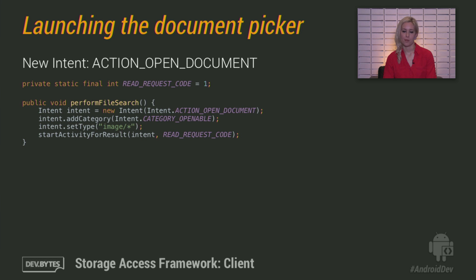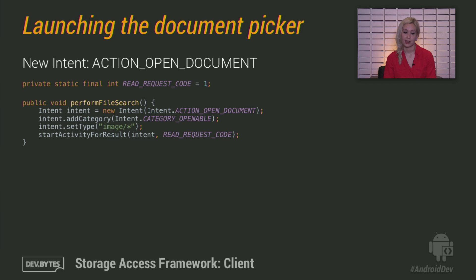Let's talk about ACTION_OPEN_DOCUMENT. This isn't much different than what you may have done before. You're going to create an intent. Category openable means we only want results that can be opened — basically documents, as opposed to a list of contacts or time zones. The type is the document MIME type you want. Here I'm asking for any type of image. Then launch your intent with a request code, which can be any value you like, but it should be unique within your app.